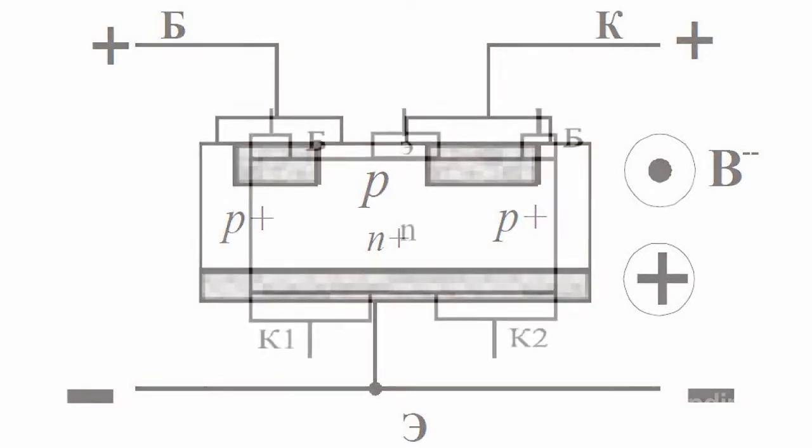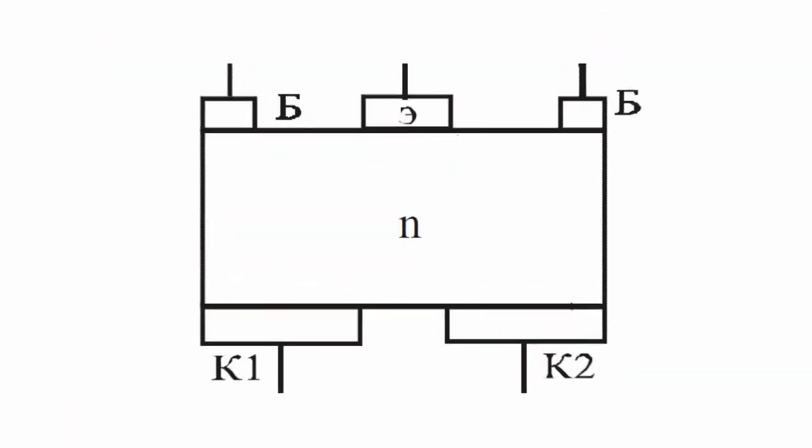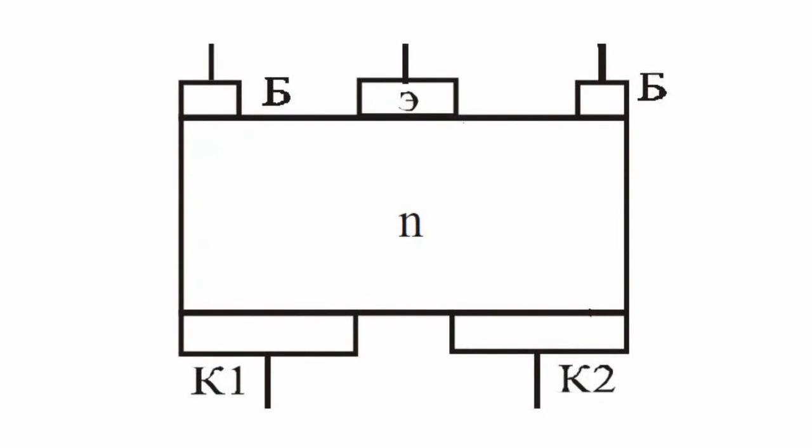The bi-collector magneto-transistor is a regular frontal bipolar transistor with the collector divided into two parts.